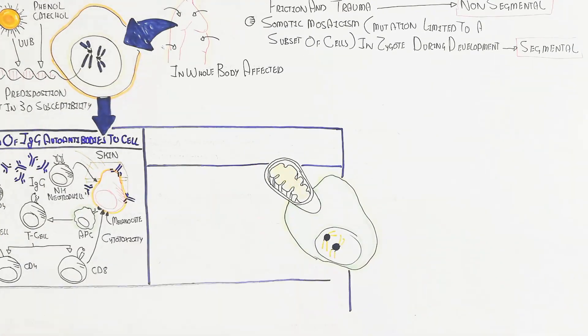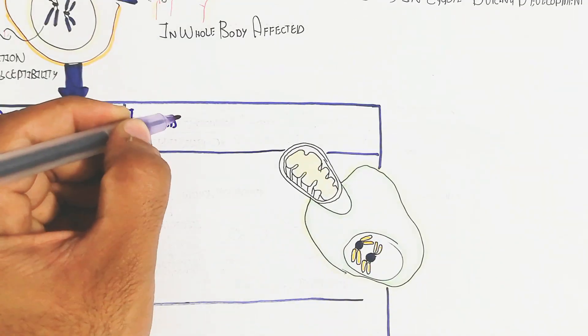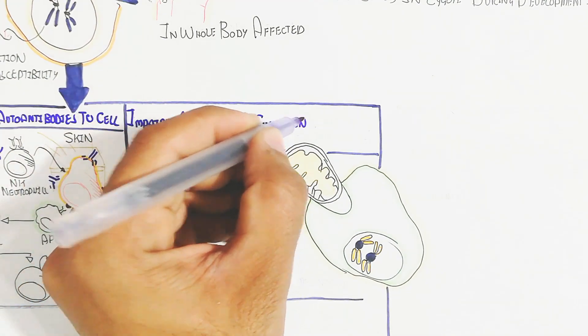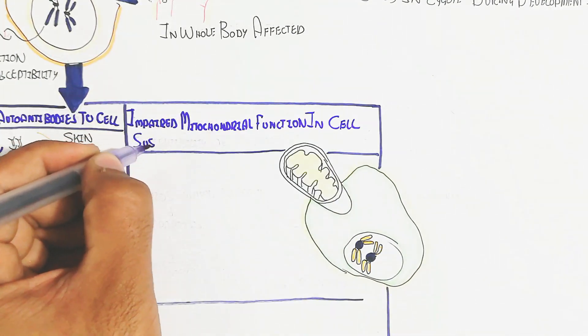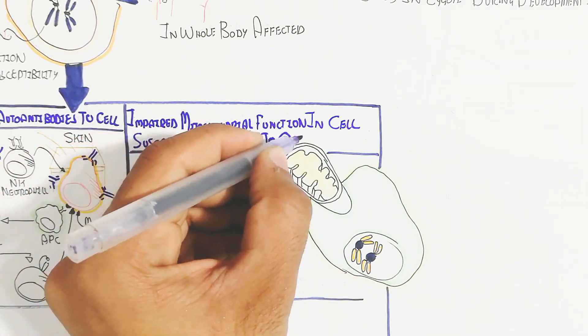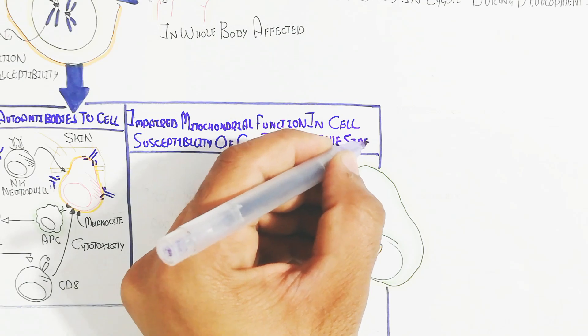Both reactions are important for killing melanocytes. This is an autoimmune disorder, and auto-antibodies are generated for the auto-antigen.